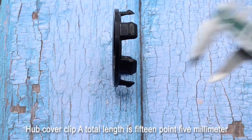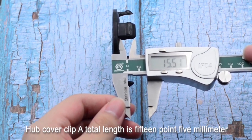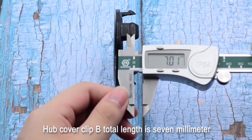Hubcover clip A total length is 15.5 mm. Hubcover clip B total length is 7 mm.